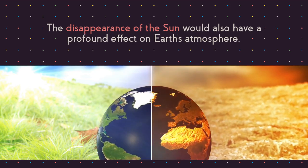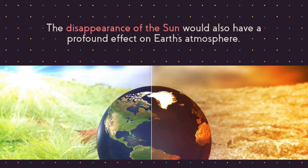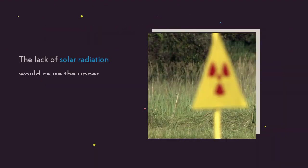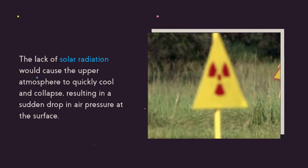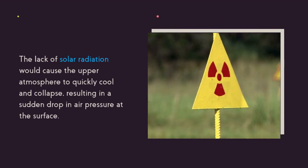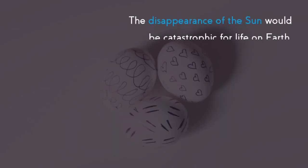The lack of solar radiation would cause the upper atmosphere to quickly cool and collapse, resulting in a sudden drop in air pressure at the surface.